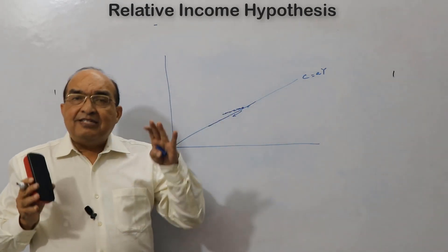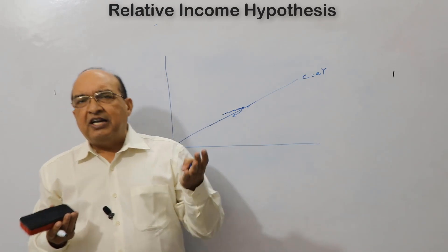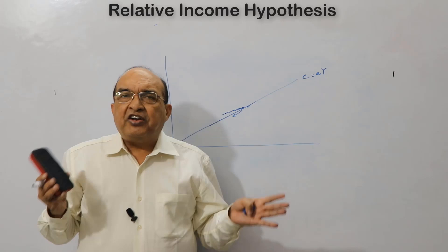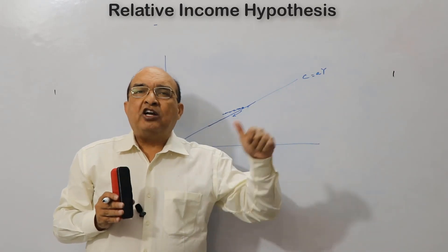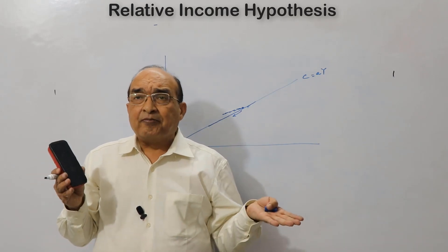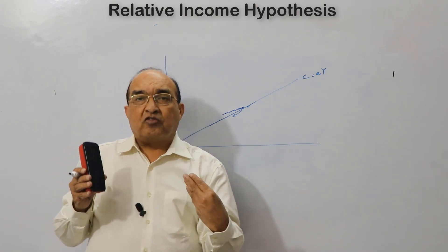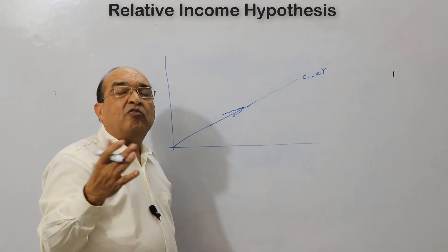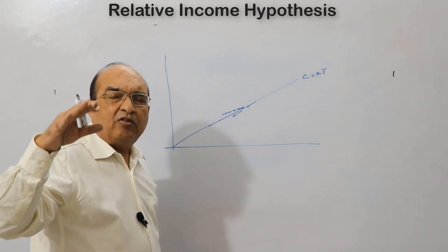This happens because it becomes difficult for an individual to come down from the level of consumption already attained — one tries to maintain the same level of consumption previously enjoyed. This is done by drawing down past savings, by borrowing, or by curtailing current saving. Earlier, one might have consumed a smaller portion of income; now one consumes a greater proportion, which prevents consumption from falling back to its previous level.